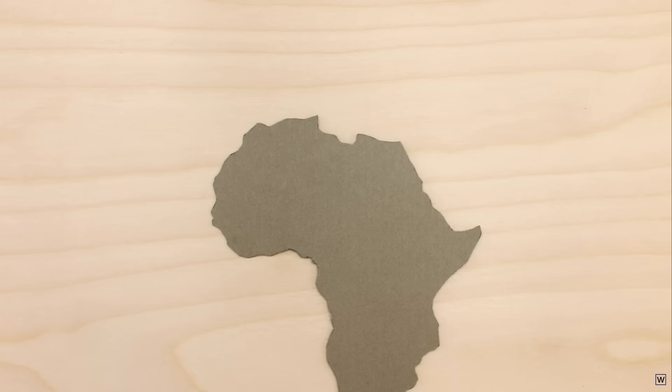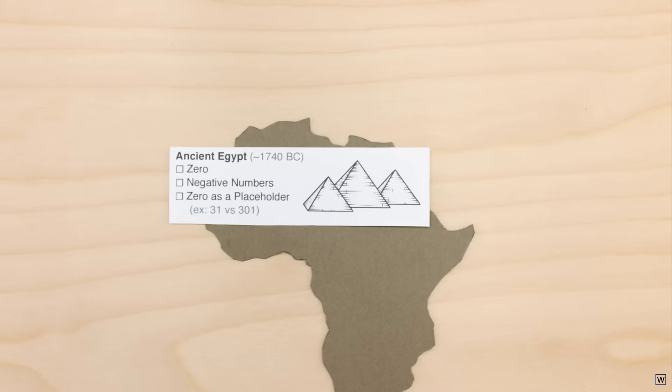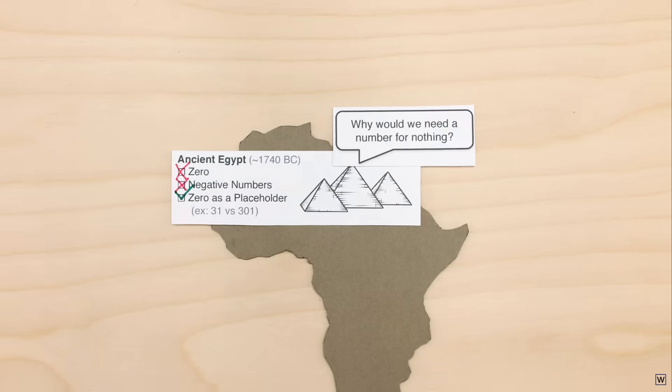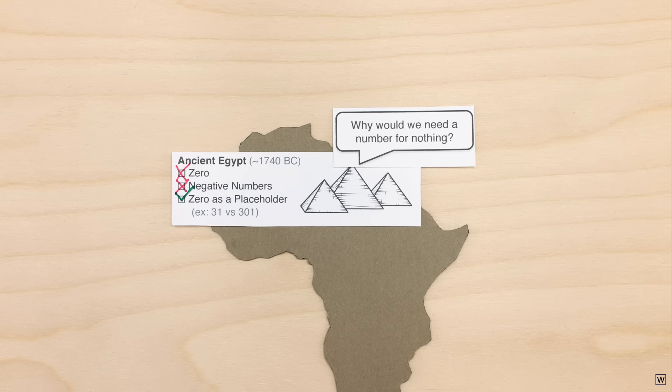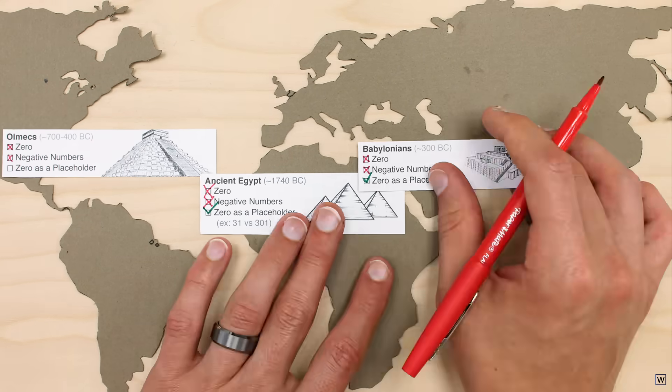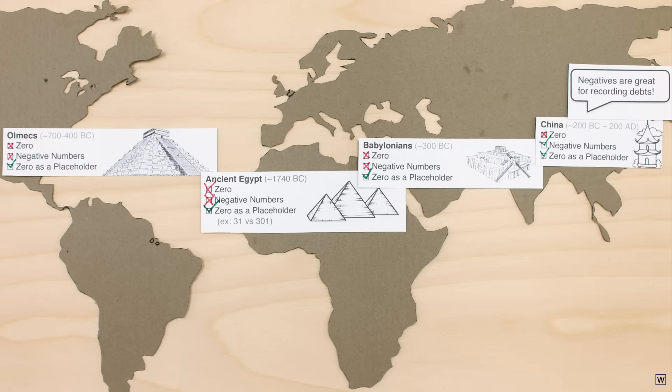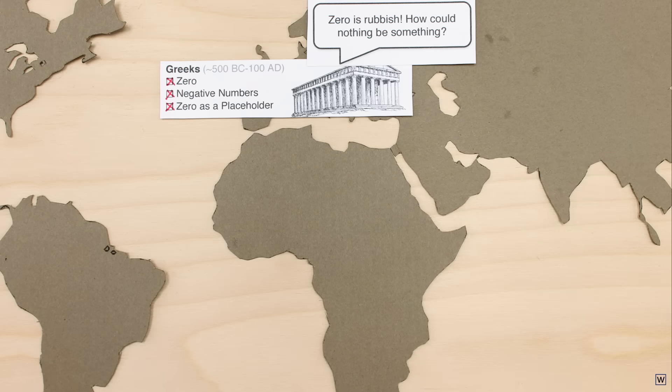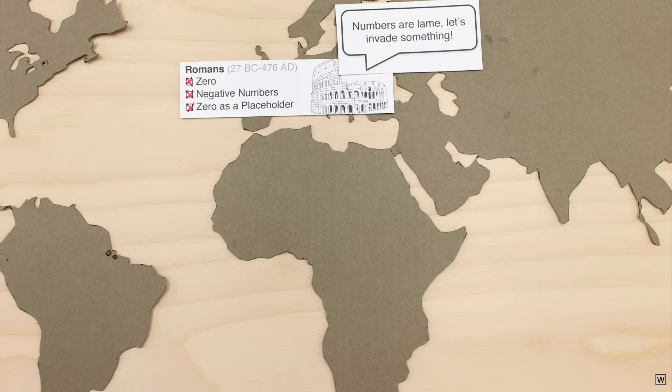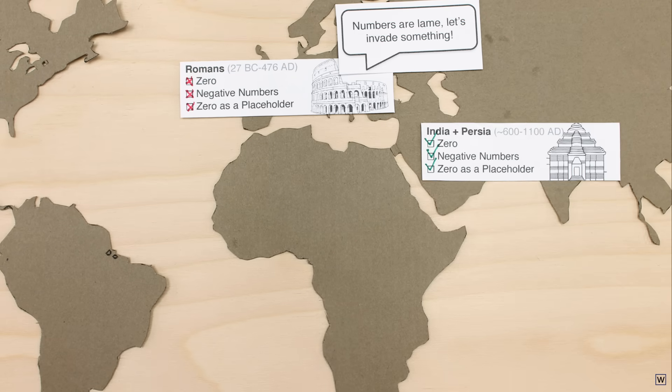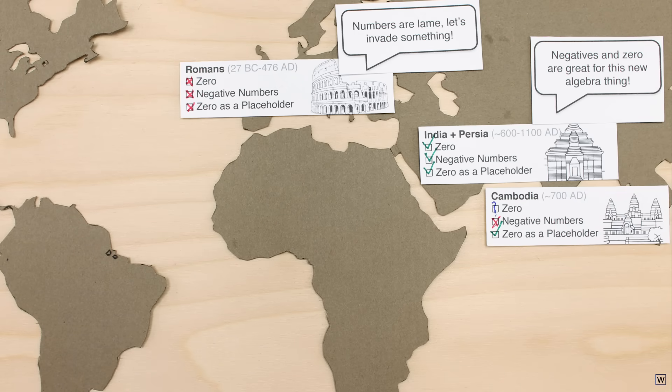The next big innovations to hit the number line were the numbers zero and negative numbers. But it took some time to get everyone on board. Since it's not obvious what these numbers mean, or how they fit into the real world, zero and negative numbers were met with skepticism, and largely avoided or ignored. Some cultures were more suspicious than others, depending largely on how people viewed the connection between mathematics and reality.